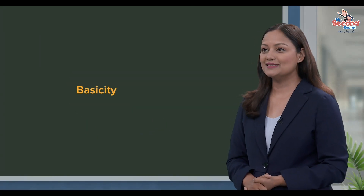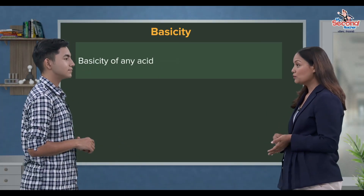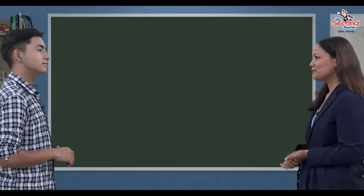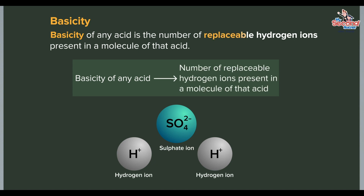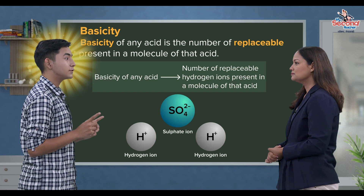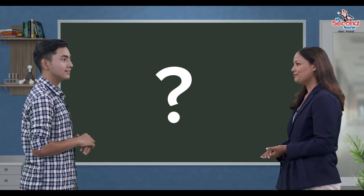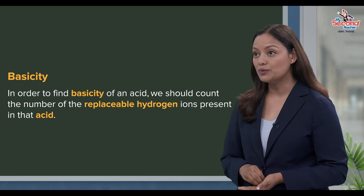Buzi e. Basicity lai aurko tariqa baata paani buzi na sakhincha. Acid ko basicity baunneko, tyo acid ko eo ta molecule na bhae ka replaceable hydrogen ions ko number ho. In other words, basicity of any acid is the number of replaceable hydrogen ions present in a molecule of that acid. Basic city lai two-way baata define gareko paani buzi. Basicity nikaalne — acid maa baayka replaceable hydrogen ion ko number kati sa, tyo count garne to honne.